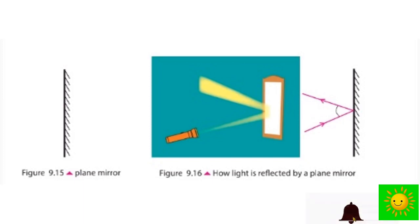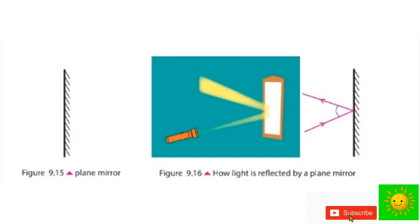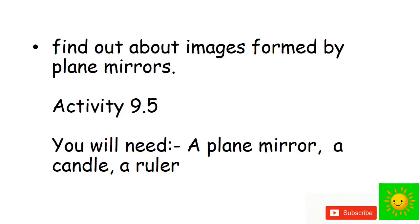A plane mirror is drawn in this diagram. The first figure is for the plane mirror and the second one shows how light is reflected by the plane mirror. The image of a candle placed in front of the plane mirror is shown in this figure. Let's find out about the images formed by plane mirrors.